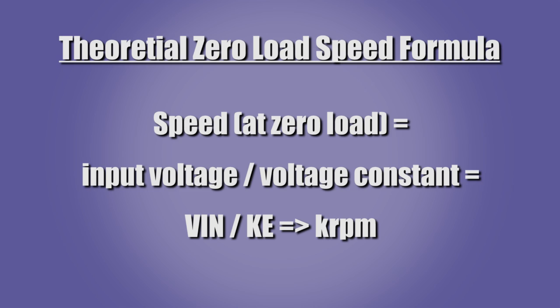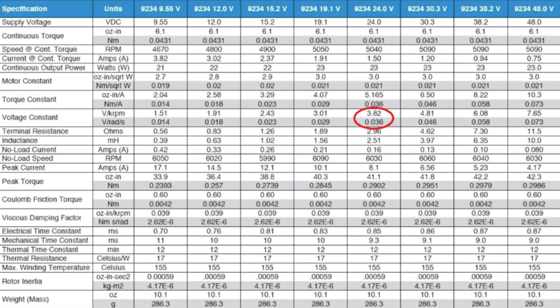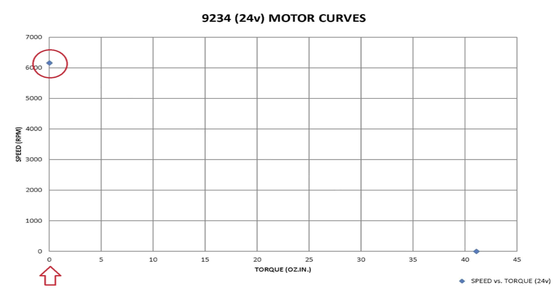Now let's refer to specific performance data in the catalog to begin drawing our curves. The formula to calculate the theoretical zero load speed is equal to the input voltage divided by the voltage constant. The voltage constant for this motor is found in the catalog data sheet. The starting point of the speed torque curve starts at the speed axis where the torque is zero.